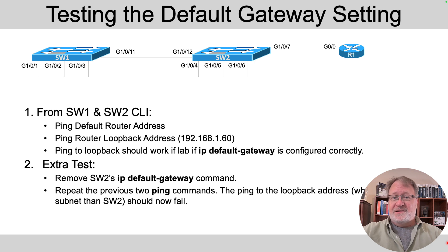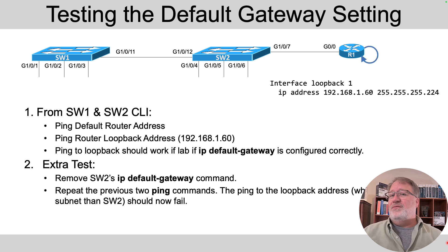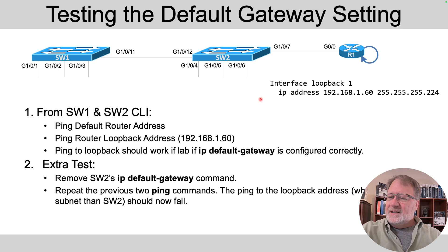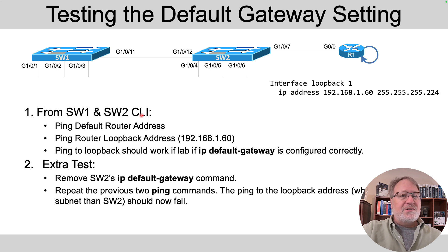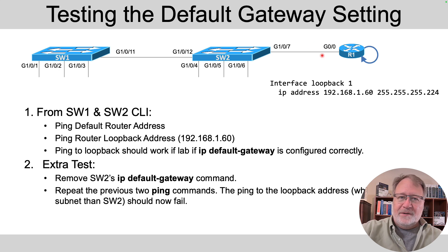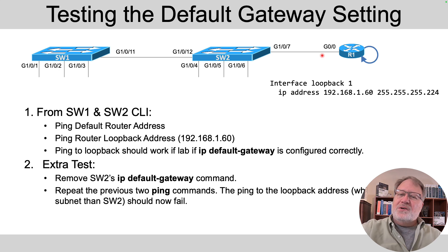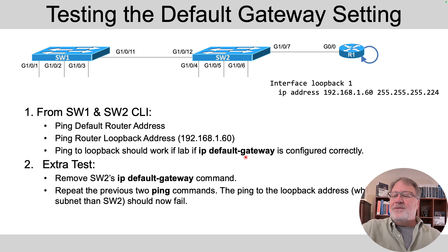This next test is a little advanced compared to where we are in the course, so feel free to skip it. There's the concept of a loopback interface on a router — an internal interface that can be used for testing. If we create those two config commands on router R1, we can use it for testing. From SW1 or SW2, you can ping the default router address on the physical interface of R1, and that should work regardless of whether you got the default gateway setting correct. But then you can ping the loopback address ending in .60, and that should only work if you got the IP default gateway configuration correct — so it's a test of your default gateway setting.